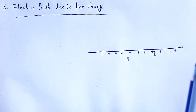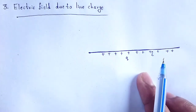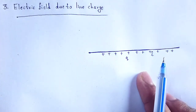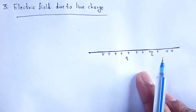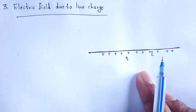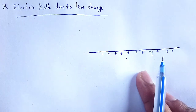Remember, in the case of a spherical shell we define a term called surface charge density, which means charge per surface area, denoted by sigma — how much charge is within a unit surface area when charge is distributed over a surface. In the case of a solid sphere, charge is distributed volumetrically, so we take volume charge density, meaning charge per unit volume, denoted by the symbol rho.